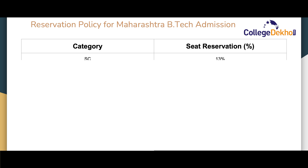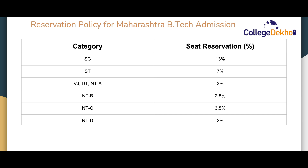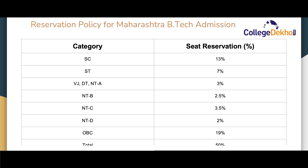As per the policy prescribed by the Government of Maharashtra, various reservations apply for different categories of candidates. Note that these reservation policies are only applicable for candidates who have the domicile of Maharashtra; all other state candidates are considered as general category. The seat reservation breakdown is: SC — 13%, ST — 7%, VJ/DT/NT-A — 3%, NT-B — 2.5%, NT-C — 3.5%, NT-D — 2%, and OBC — 9%. Overall, 50% of seats are reserved for various categories in Maharashtra B.Tech admission.